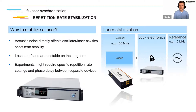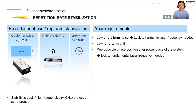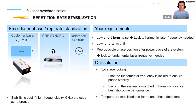You need different sorts of components. First of all, you need a laser source — that's the fundamental source you want to synchronize. And if you want to synchronize one unit to another, there should be a reference system. The part in the middle is what we like to discuss today: the locking electronics. To lock a laser system to a fixed reference and achieve fixed repetition rate stabilization, it is very important to have a high-frequency reference source. The higher the reference frequency, the better the stability of the laser locking. Customers typically ask us for very low short-term noise and also low long-term drift.